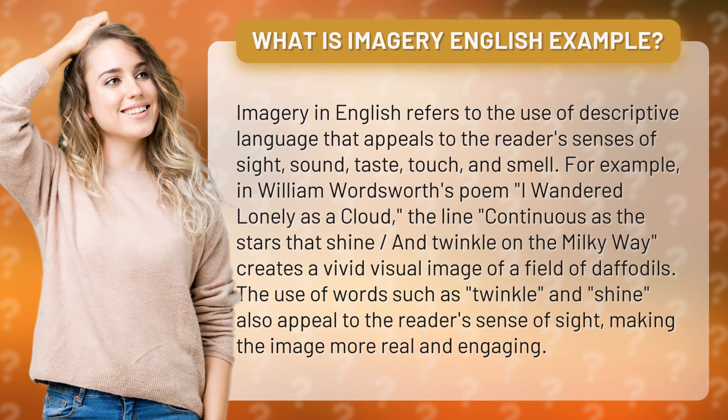For example, in William Wordsworth's poem 'I Wandered Lonely as a Cloud,' the line 'continuous as the stars that shine and twinkle on the Milky Way' creates a vivid visual image of a field of daffodils. The use of words such as 'twinkle' and 'shine' also appeal to the reader's sense of sight, making the image more real and engaging.